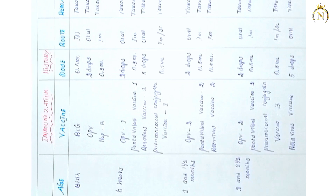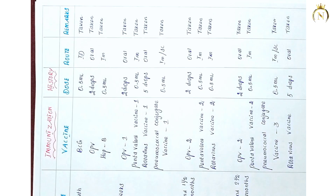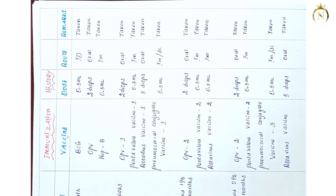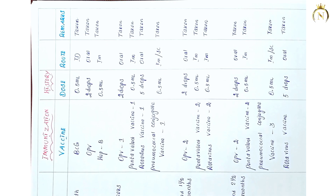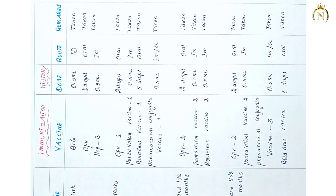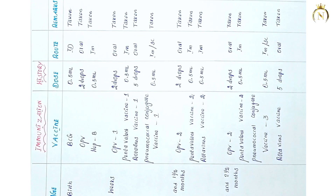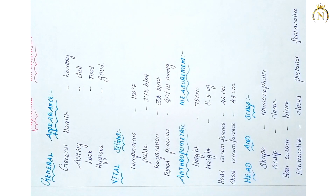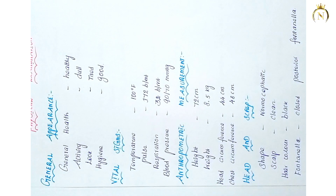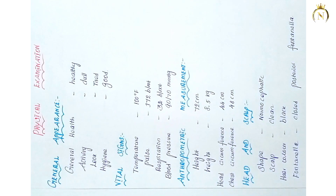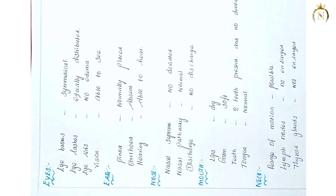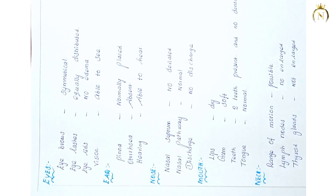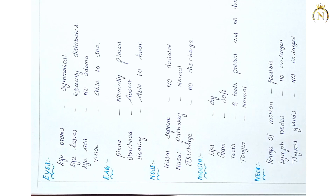Then you have to mention the immunization history in the growth and development documentation. For the immunization history, at every age, whatever immunization vaccine the infant has taken, you can mention it clearly.